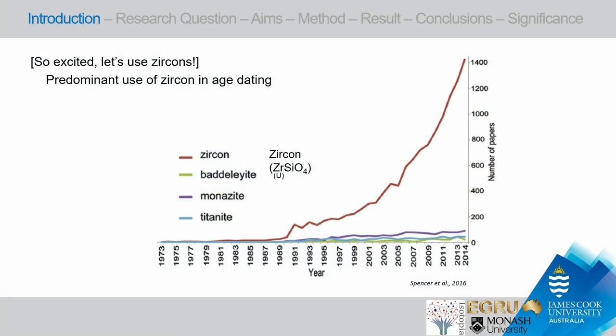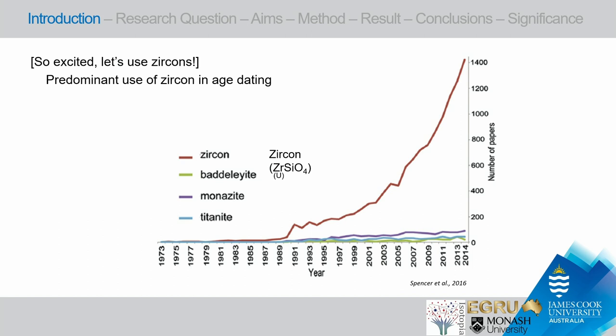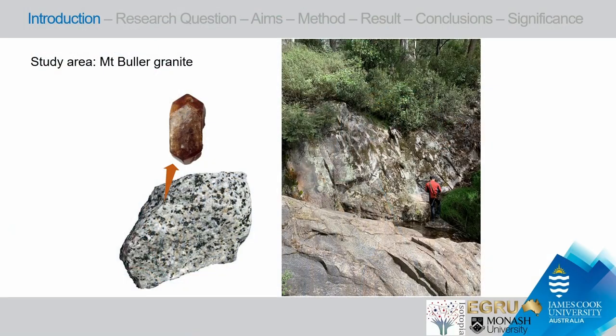It sounds really exciting. We get the oldest age from zircon — why don't we do more? That's exactly what scientists did. For the past couple of decades, they used zircon, and it is now the dominant method for dating, making up more than 90% of age dating studies. We can use different minerals if they contain uranium, but zircon is number one.